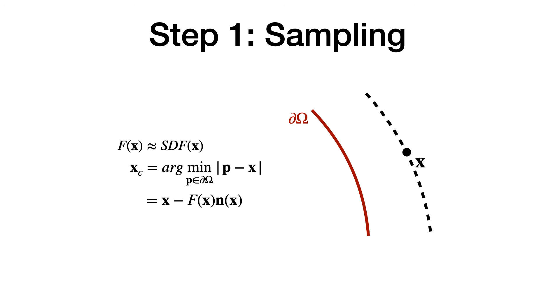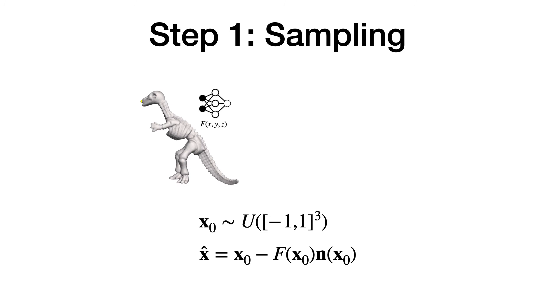Let's start with sampling. To sample points from the zero-level set, we use a nice property of the signed distance function. For any point x in the space, if we take the step negative f(x) times surface normal n(x), then we will land on the closest point to x located at the zero level set. With this property, we can move uniformly sampled points towards the zero isosurface to create a sample.